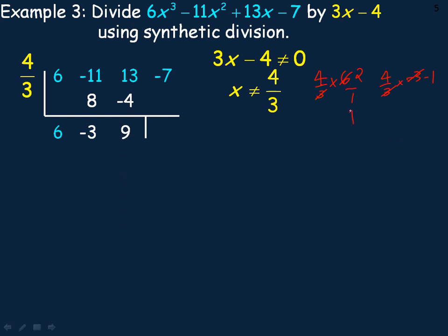One last time, 4/3 times the 9. 3 goes into the 9 three times, and 4 times 3 is 12. So 12 and -7 add to 5, that's the remainder.